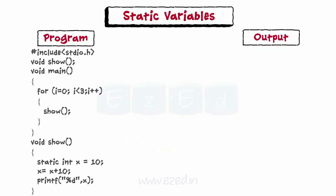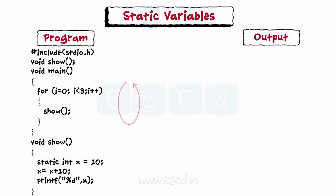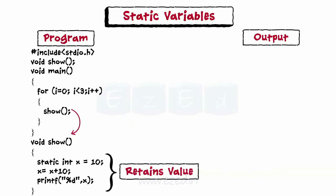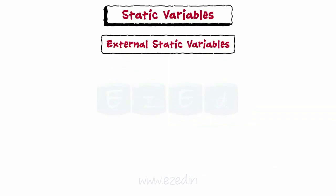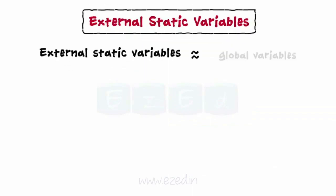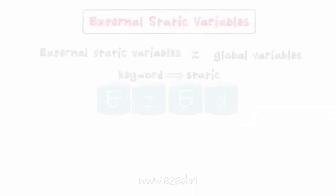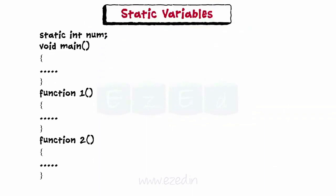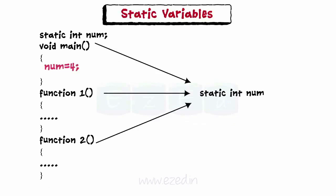For example, in the program displayed, variable x is declared as a local static variable. In the main function, the function show is called three times. Each time the function show is called, its value is retained between function calls. Hence, the output will be as shown. External static variables in a program file are declared like global variables with the static keyword. These static variables are accessible by all functions in the program file where they are declared.